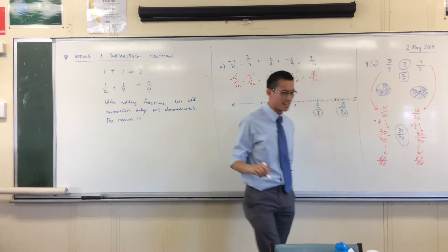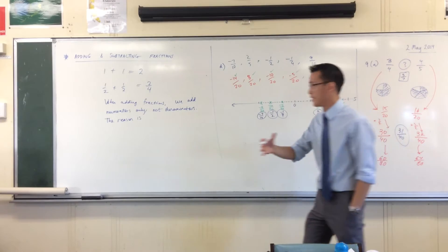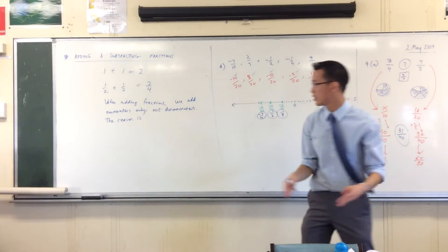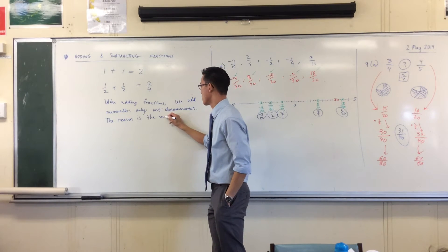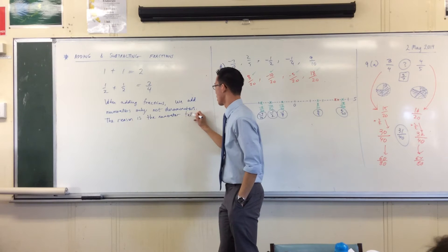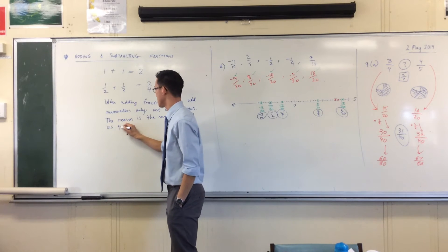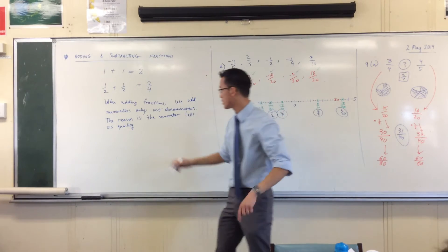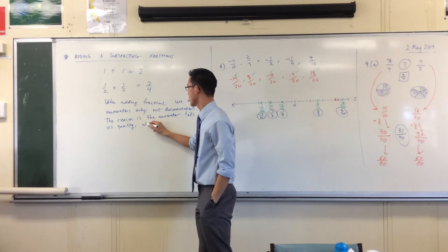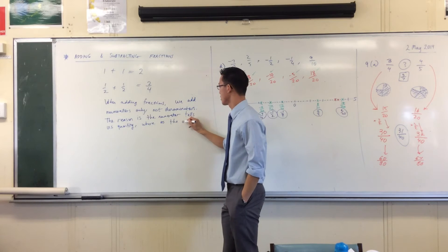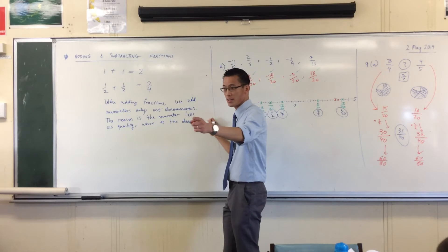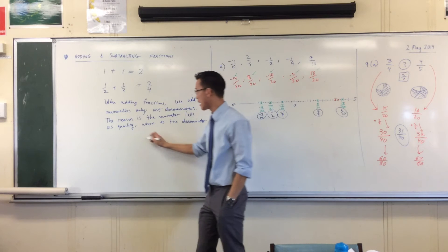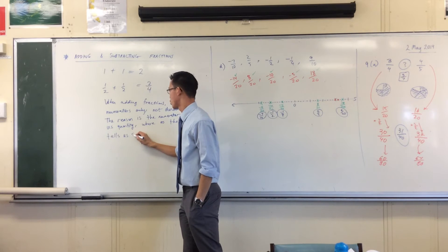The one tells us the quantity - how many of these things do I have? The numerator tells us quantity. How many of these things do I have? Whereas the denominator, and this is what you were very close to saying, you had the right idea - the denominator does not tell us quantity. The denominator tells us size.